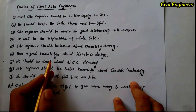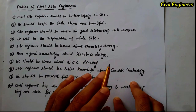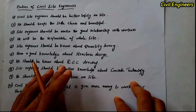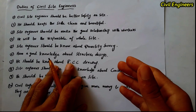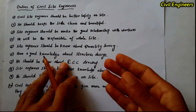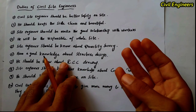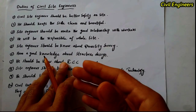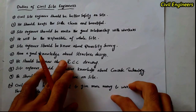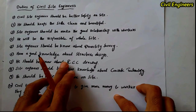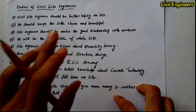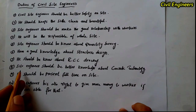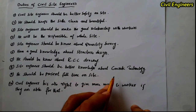Sixth: have good knowledge about structural design. Seventh: he should know about RCC drawing. With the RCC drawing he can do his work on site — including placing and spacing of main bars, distribution bars, placing of steel, concrete cover, and all other points present in the RCC drawing.